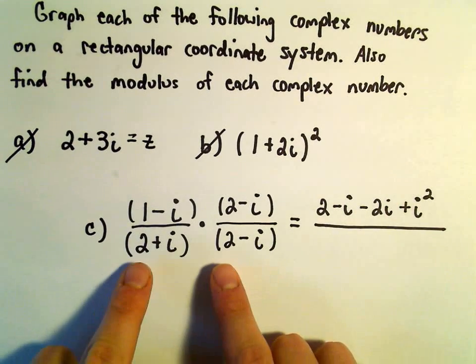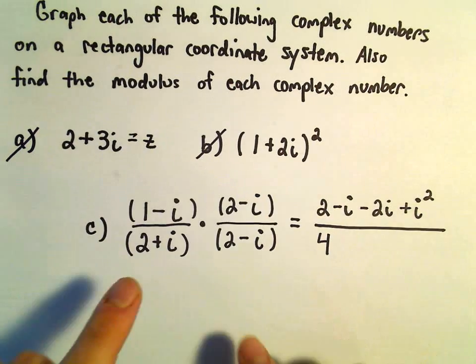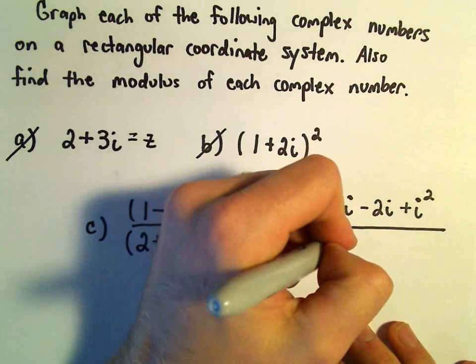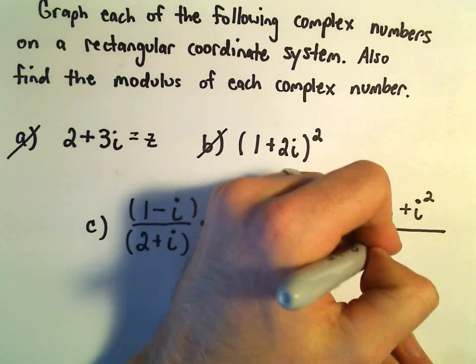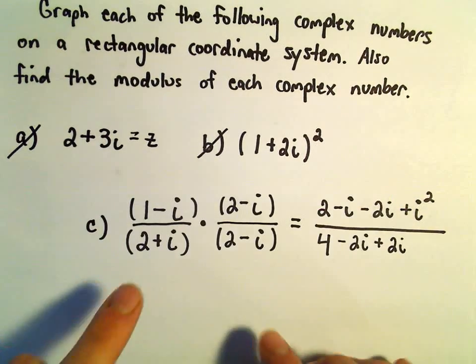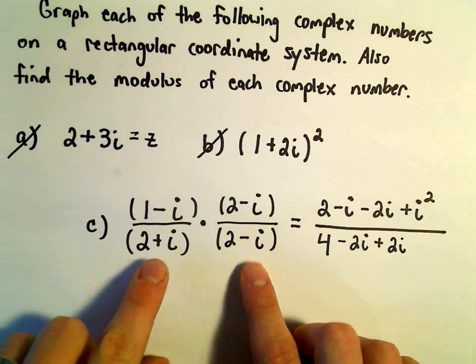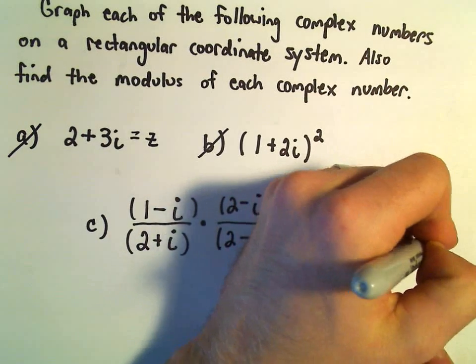In the denominator, we'll have 2 times 2, which is 4. We'll get 2 times negative i, which will be negative 2i. On the inside, we'll get a positive 2i. Then we have positive i times negative i, which will give us negative i squared.